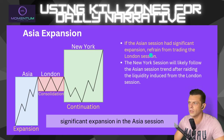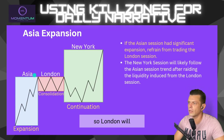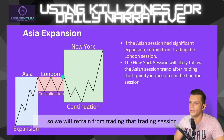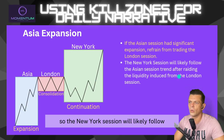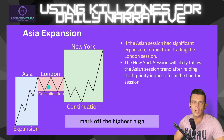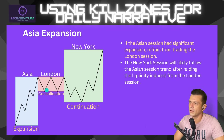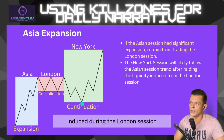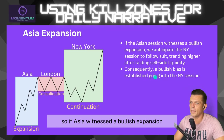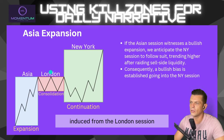The next profile is significant Asia session expansion. Whenever we have distribution or expansion during the Asia session, we refrain from trading London — it will normally chop around and consolidate, making for difficult conditions. We wait for New York instead. The New York session will likely follow the Asia trend after raiding the liquidity induced during London. Mark off the highest high and lowest low of the London session and expect a Judas swing from the New York open into that London sell-side liquidity, then look for a long after a bullish market structure shift.